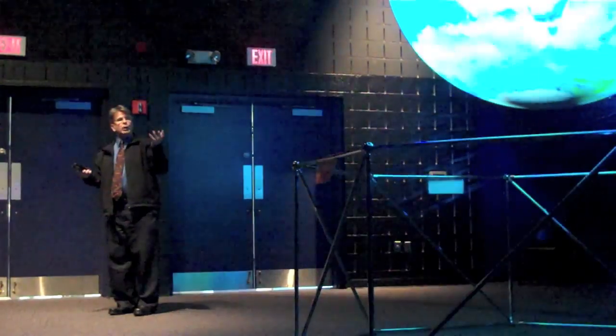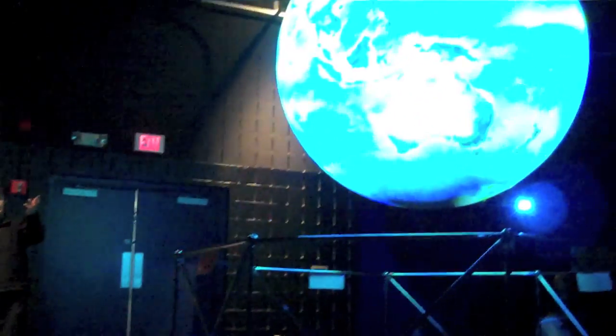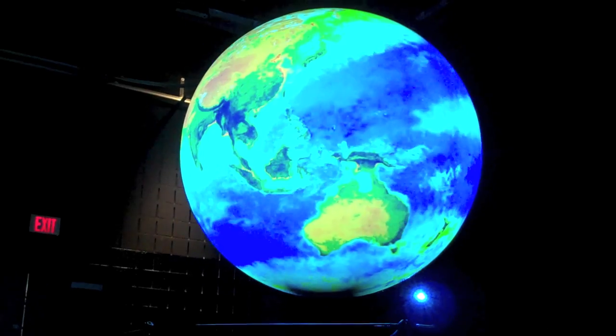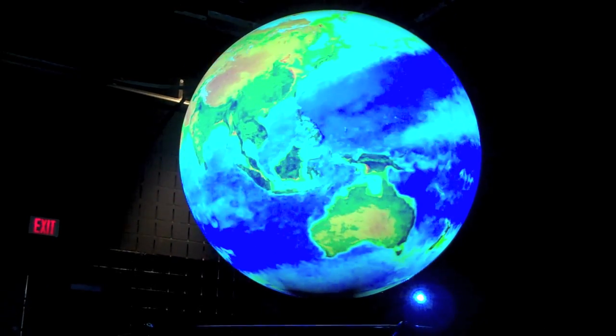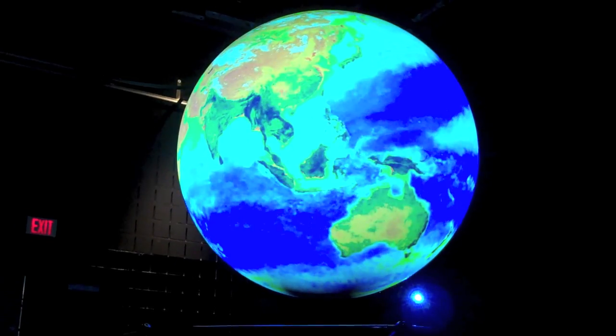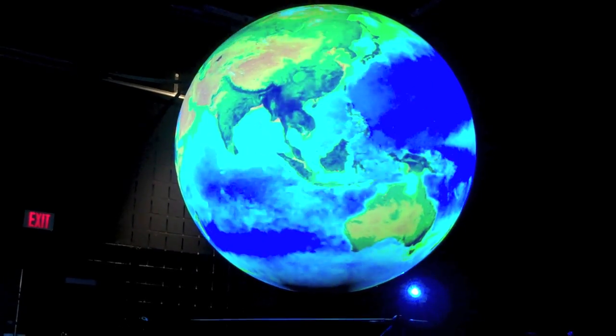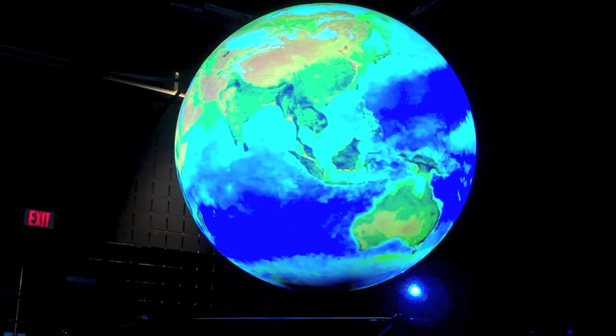So what do we do with the Earth? Well, we look at it in ways that our eyes don't see. This is a time loop of seven years of the biological productivity of our planet. We are a living planet. How do we know?